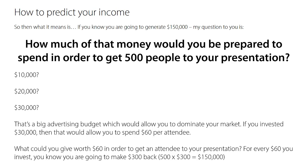What could you give worth $60 in order to get an attendee to your presentation? For every $60 you invest, you know you are going to make $300 back. For every $60 you put in, you get $300 back. The math is: 500 people times $300 equals $150,000. If you get in front of 500 people, on average they are going to generate $300 each. Not all of them will spend $300, but at the 10% conversion rate, $150,000 divided by the attendees equals $300 per attendee — so on average, for every person who comes to the webinar, you make $300.